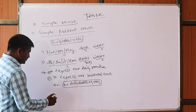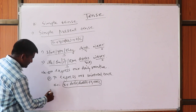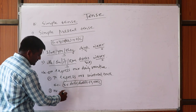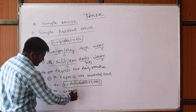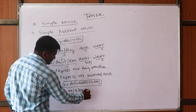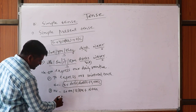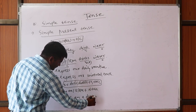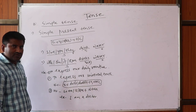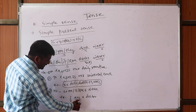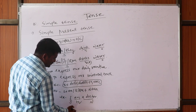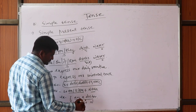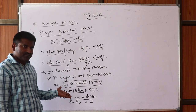Sometimes we use helping verbs. The formula for helping verbs is S + am/is/are + Noun. For example: I am a doctor. Here 'I' is the subject, 'am' is the helping verb, and 'a doctor' is the noun. This is also a style of expressing simple present tense.